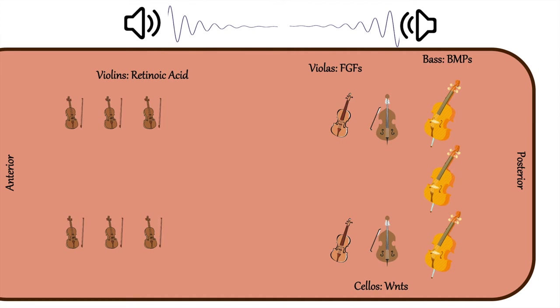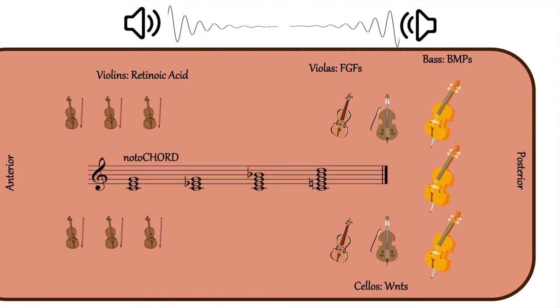To split the first violins from the second violins, the note A chord exists, running parallel between. When the various musicians play, the sound from each instrument is louder as you are closer to the instrument, and the sound decreases as you get further away. If we stood on the anterior side of the room, we'd basically just hear violins. As we move to the posterior side of the room, we would hear the violas, cellos, and bass instead. The intersection between these sounds overlapping, where softer volumes of all instruments can be heard, is what we will call the determination wavefront.